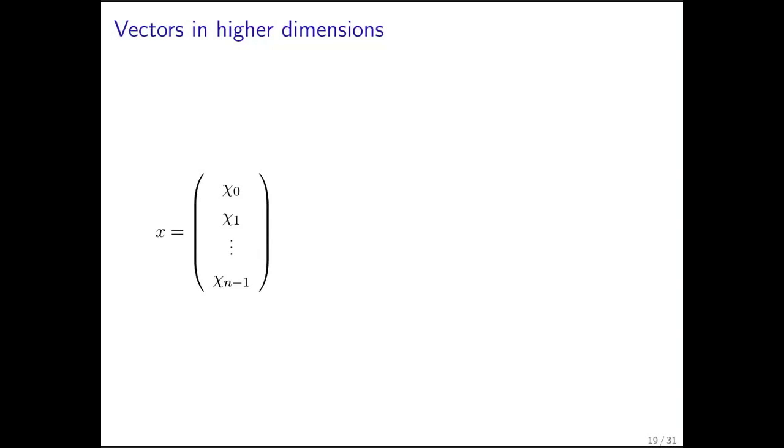This, of course, generalizes, so we can have vectors in higher dimensions, in this case n dimensions. The way you describe a vector is that it's an ordered array. The entries in this array we're going to call components, sometimes we'll call them elements.